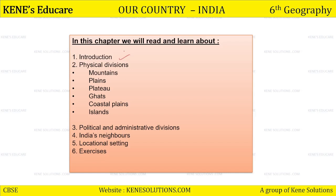First will be the introduction of the chapter. We will read some introduction regarding our country India. Then we will read the physical divisions of India — mountains, northern plains, plateau, the peninsular plateau, the ghats, western ghats and eastern ghats, the coastal plains and the islands of our country. India also has islands. Then we will be reading about the political and administrative divisions — hamaari kitni states hai, kitni union territory hai, India ke neighbors kaun hai. Phir hum padhengi India ki locational setting ke baare mein, and then we will recall the chapter with the help of some exercises.